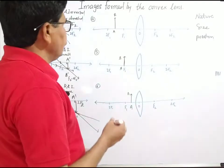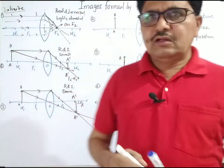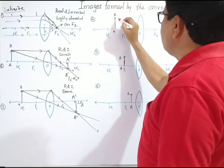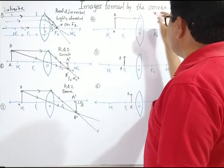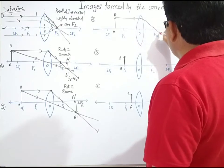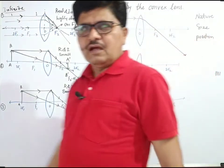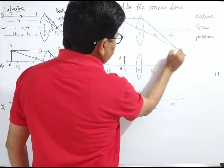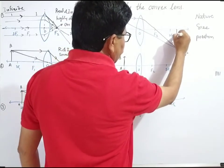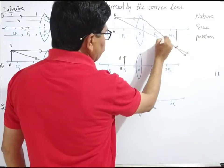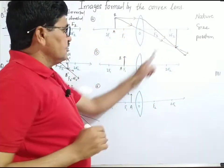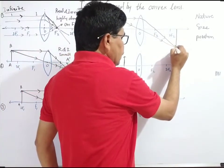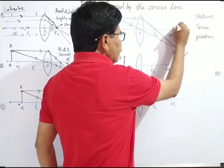Next, object is placed between F1 and 2F1. Two rays are originated from point B. The first ray is parallel to the principal axis; after refraction, it passes through the focus. The second ray passes through the optical center without any deviation. After refraction, they meet together just beyond 2F2. The image of point B is B', and the image of the object is A'B'.